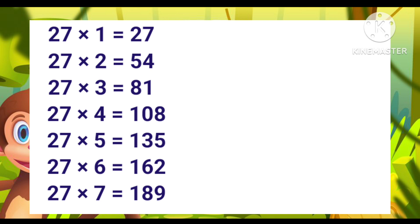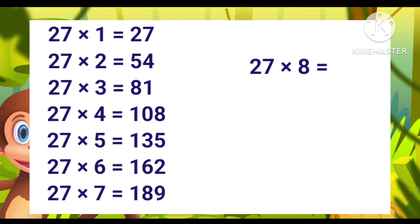27 sixes are 162. 27 sevens are 189. 27 eights are 216.